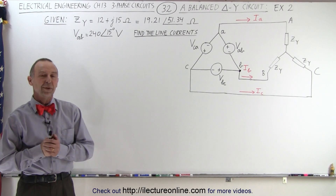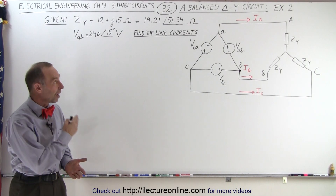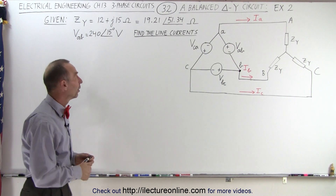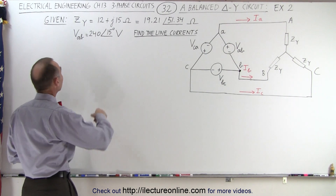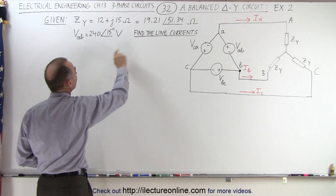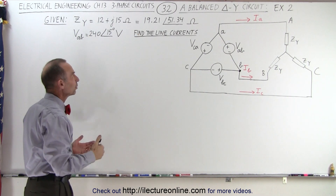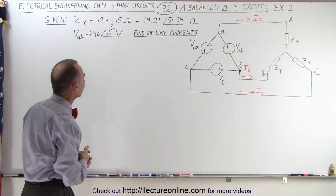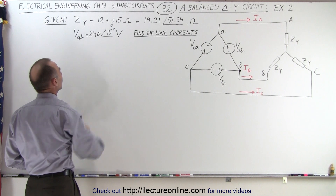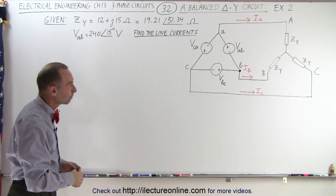Welcome to our lecture online. Here's one more example of how to find the line currents in a delta-Y circuit. We're given that the impedance is 12 plus J15, which we converted to magnitude and phase angle format, and that the voltage between A and B is 240 volts with a phase angle of 15 degrees.